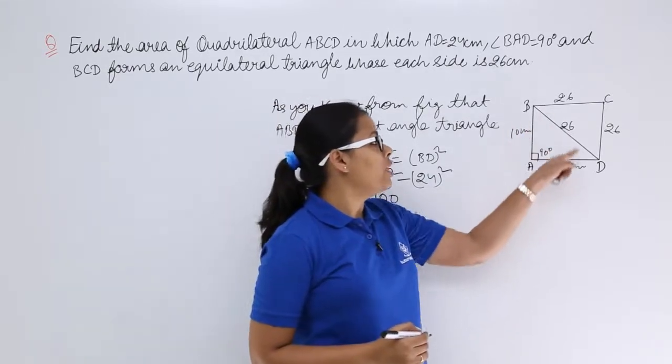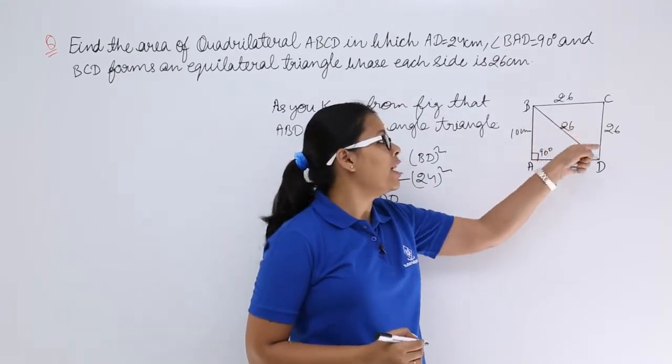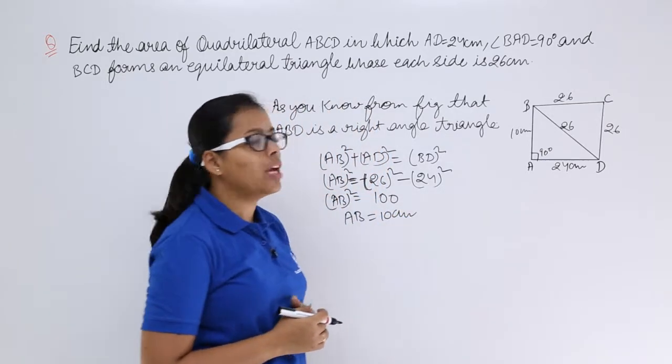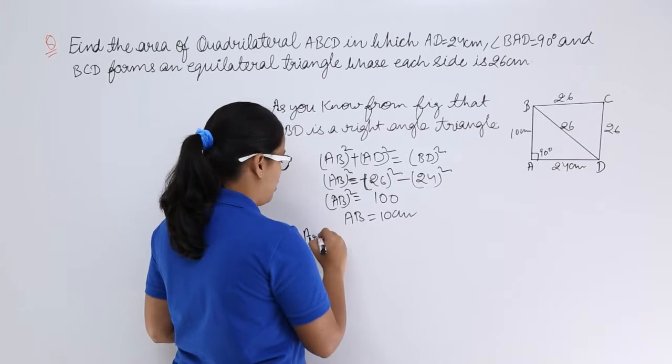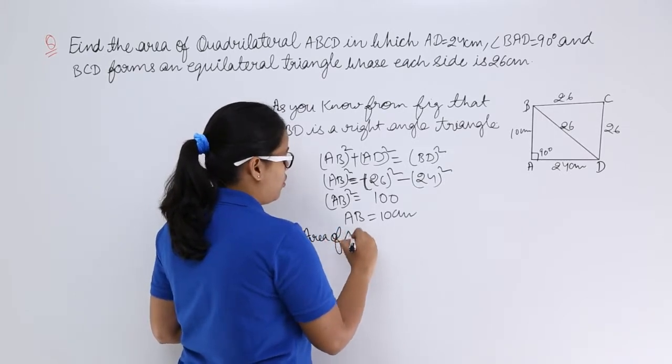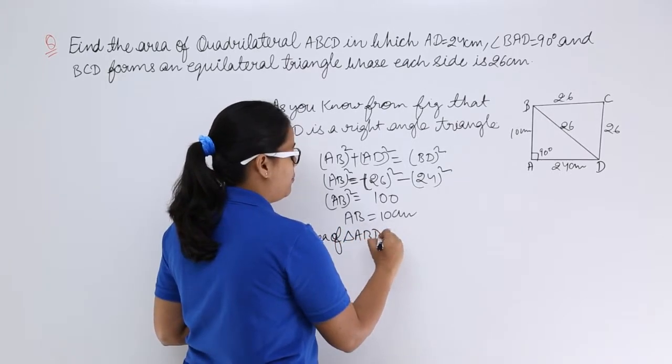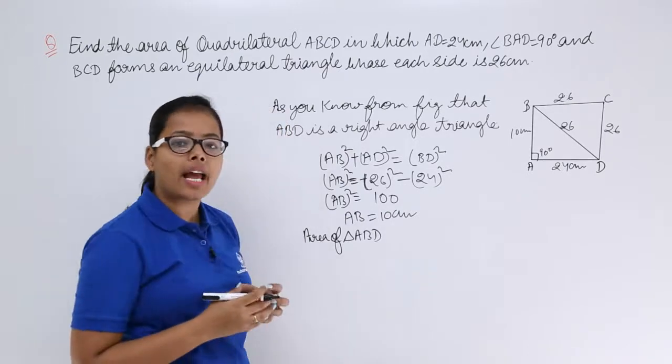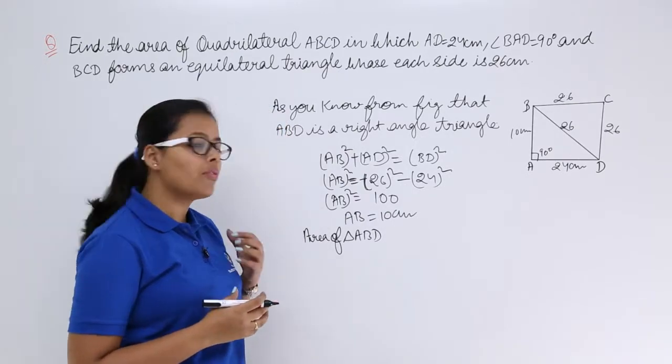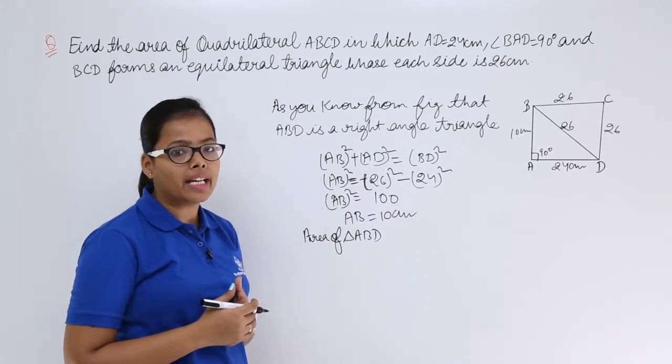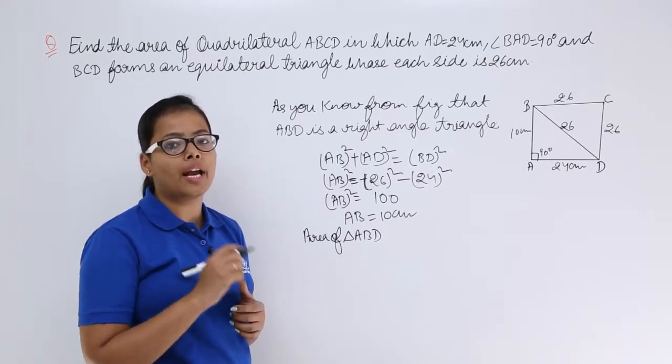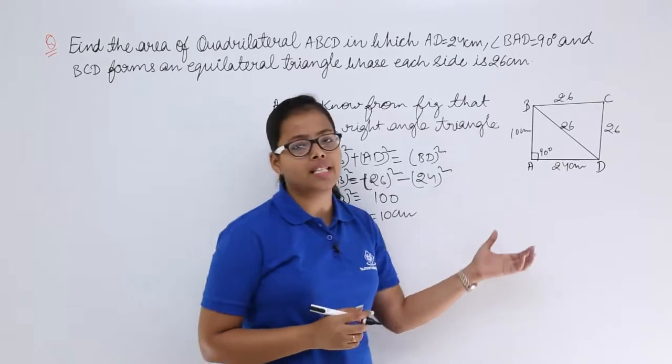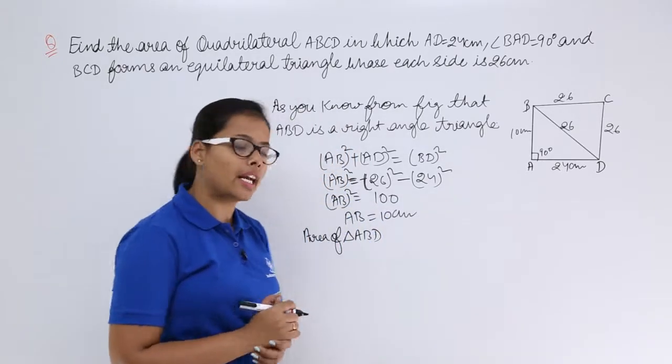Now let's find out the area for this triangle then we will find out the area for equilateral triangle. So let's find out the area for triangle ABD first. Area of triangle ABD. As you know that this is a right angle triangle so there is another formula for finding the area of a triangle which is equal to half into base into height. Using that formula you can easily find out the area for a right angle triangle.